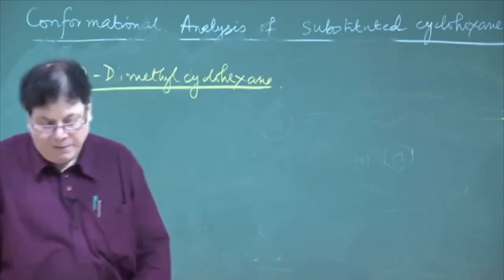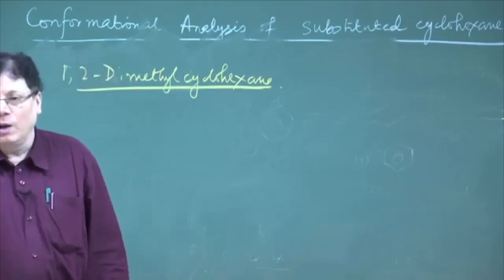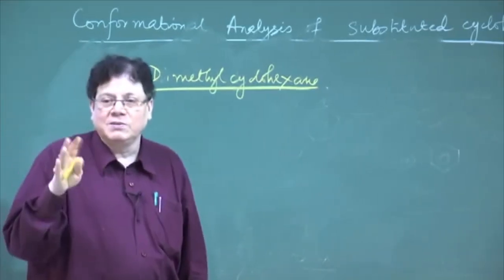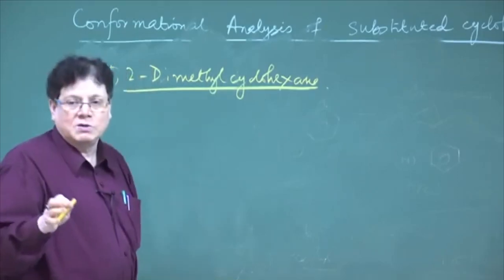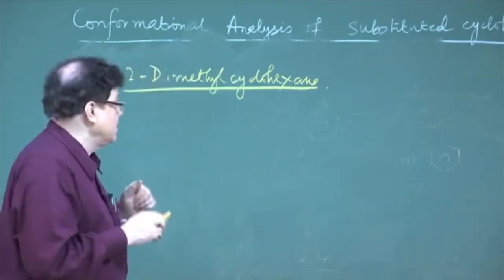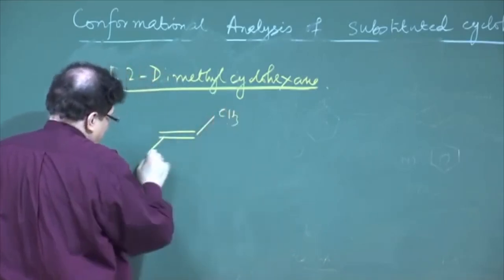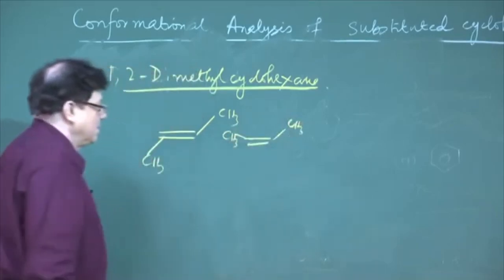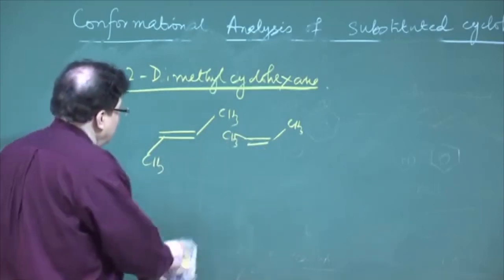Now, when you come to this 1,2 system or 1,3 system, there is the question of stereoisomerism — the real stereoisomerism, not the conformational — the stereoisomerism where compounds are classified as diastereomers. You have a case of diastereomerism where the diastereomers cannot be interconverted by rotation. Like cis and trans butene, they are diastereomers and cannot be interconverted by rotation; you have to break the bond and make the bond to convert one from the other. These are called cis and trans.